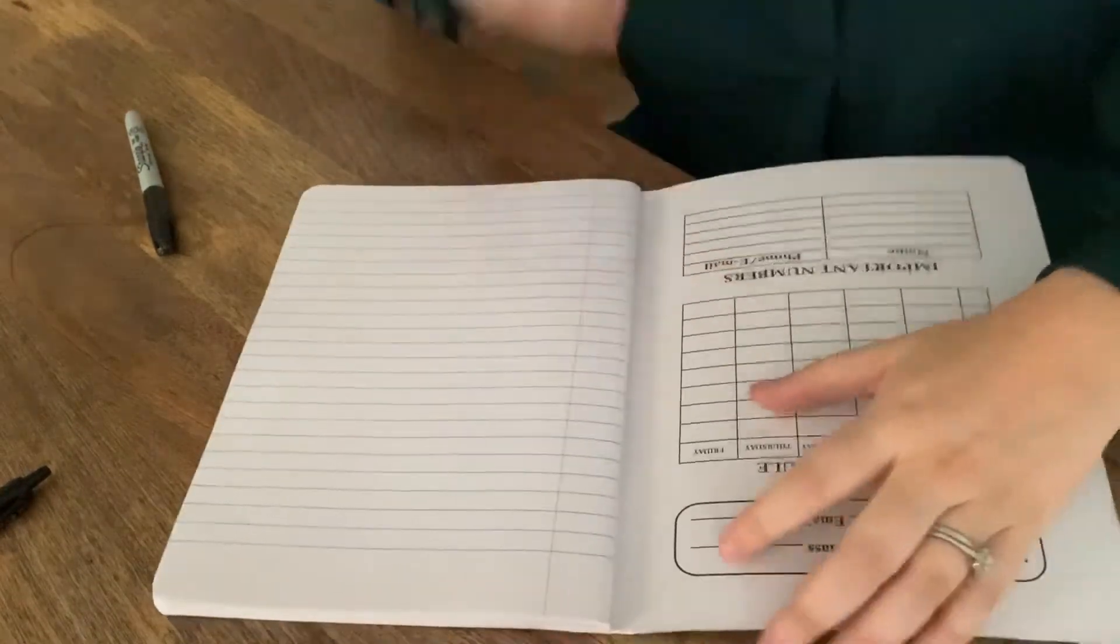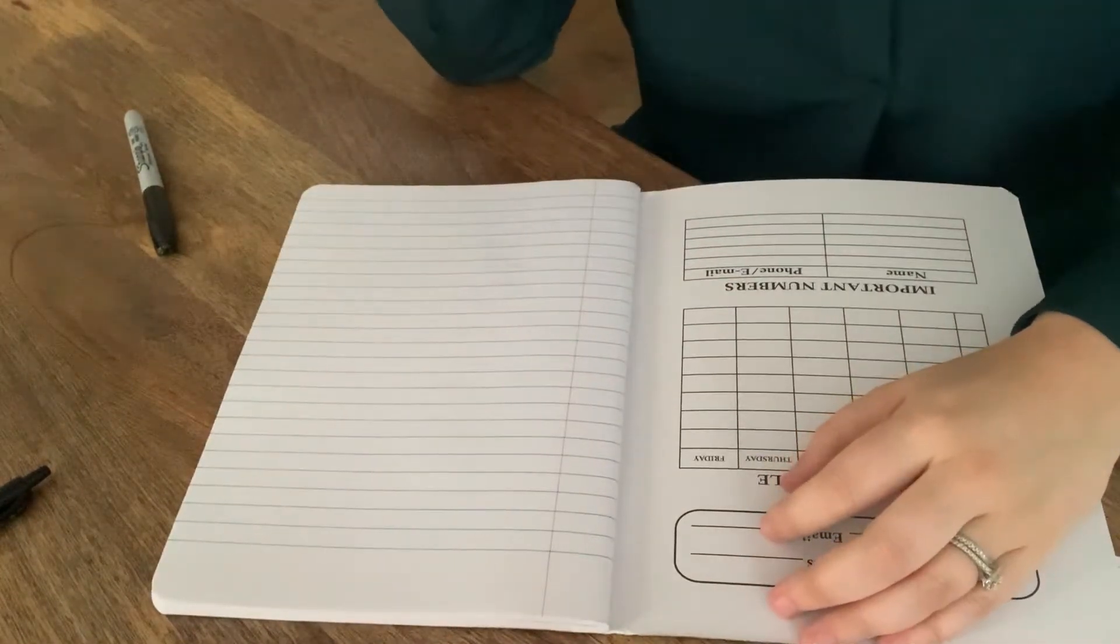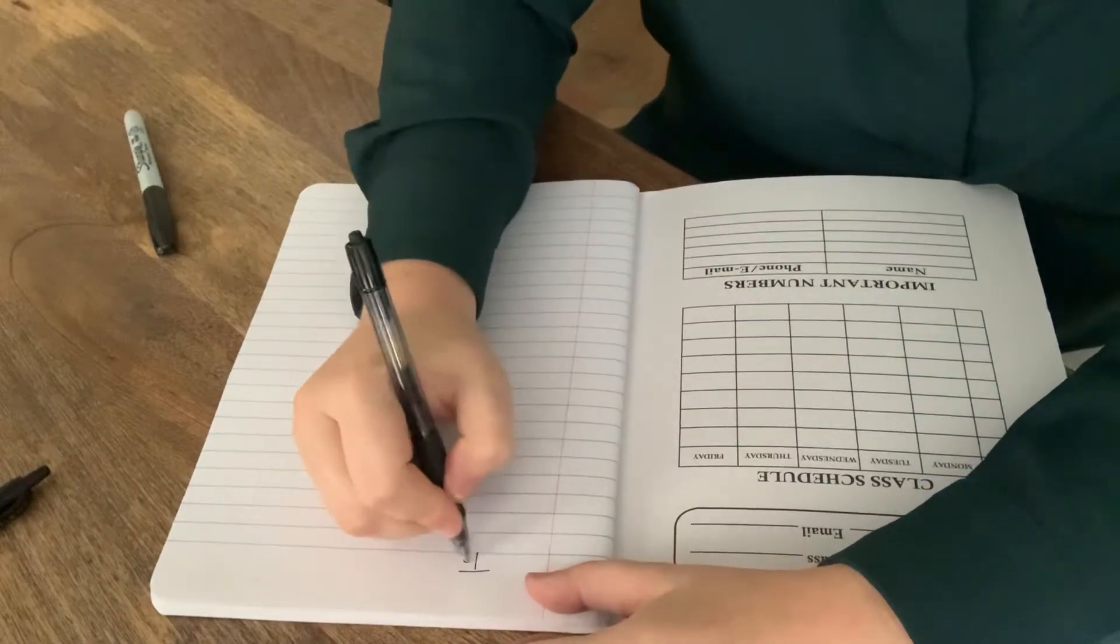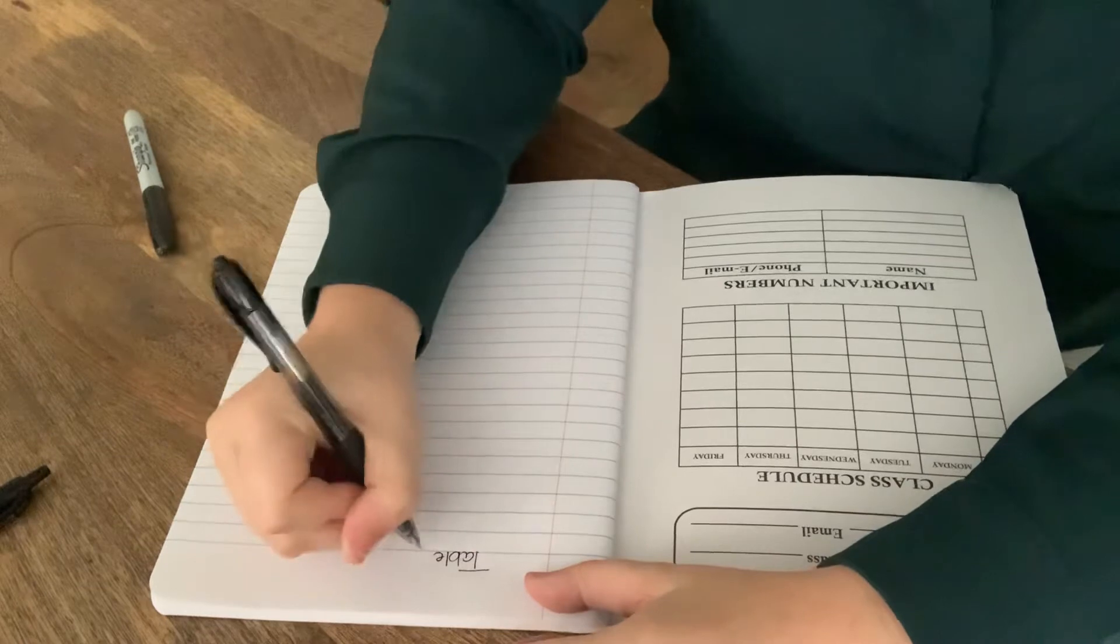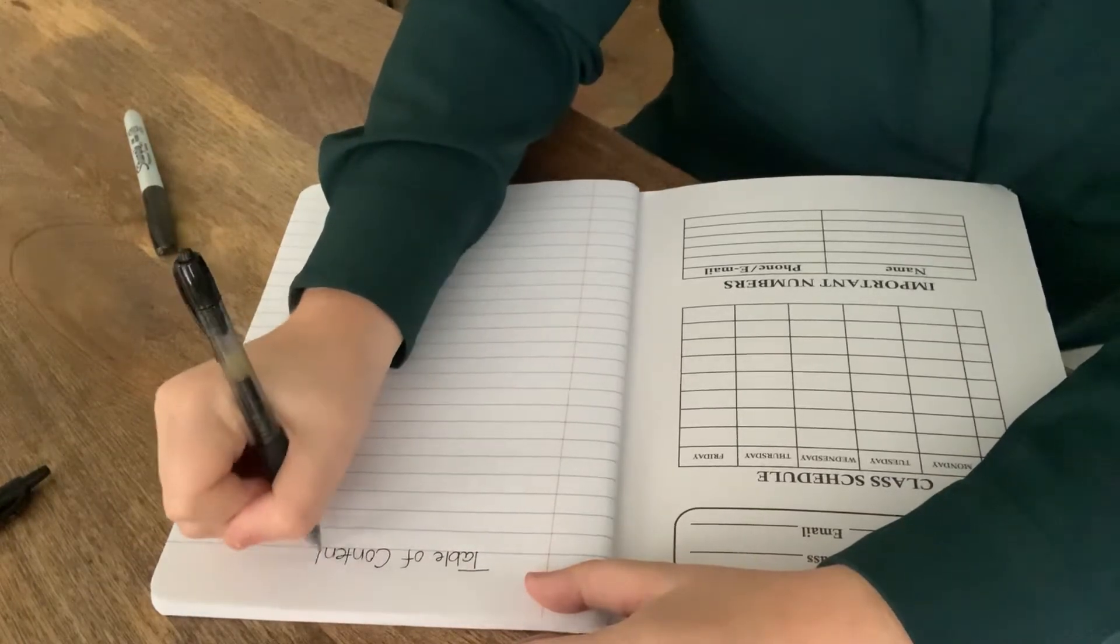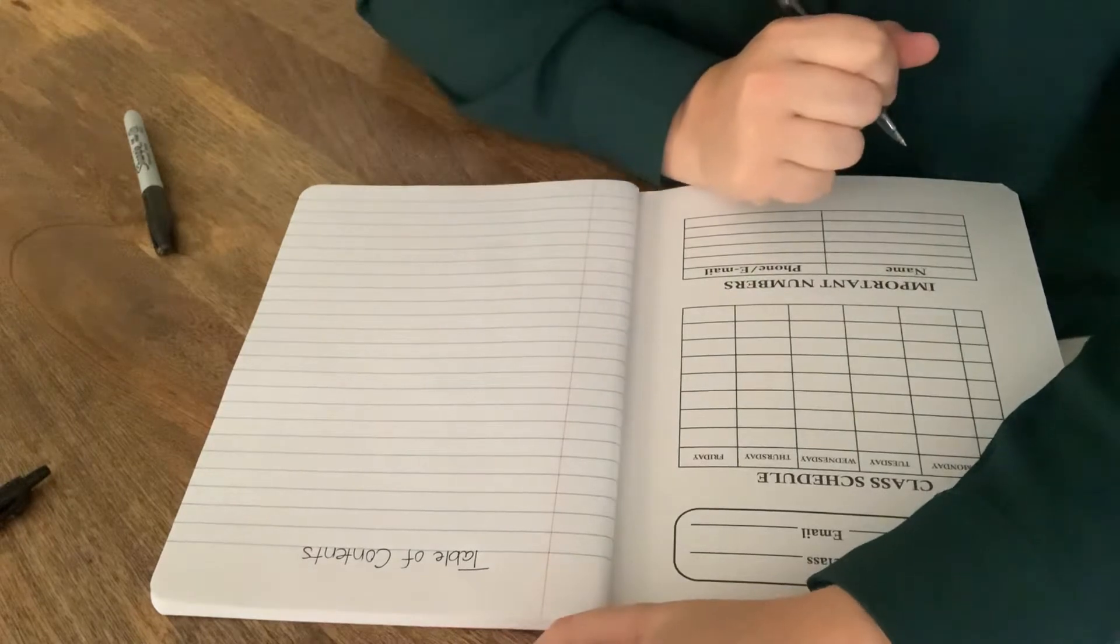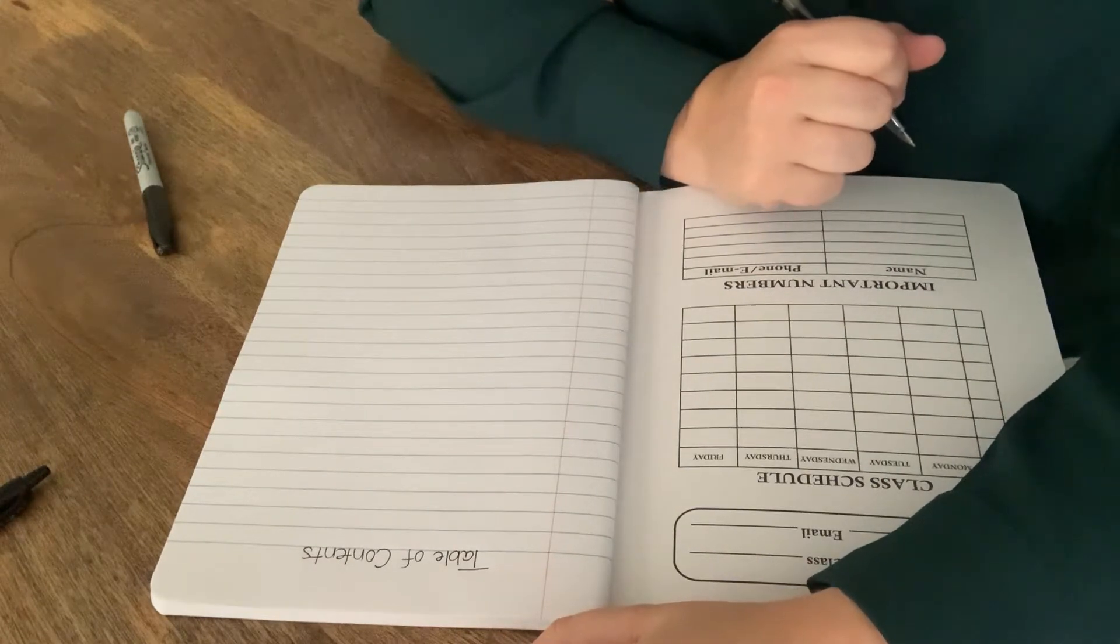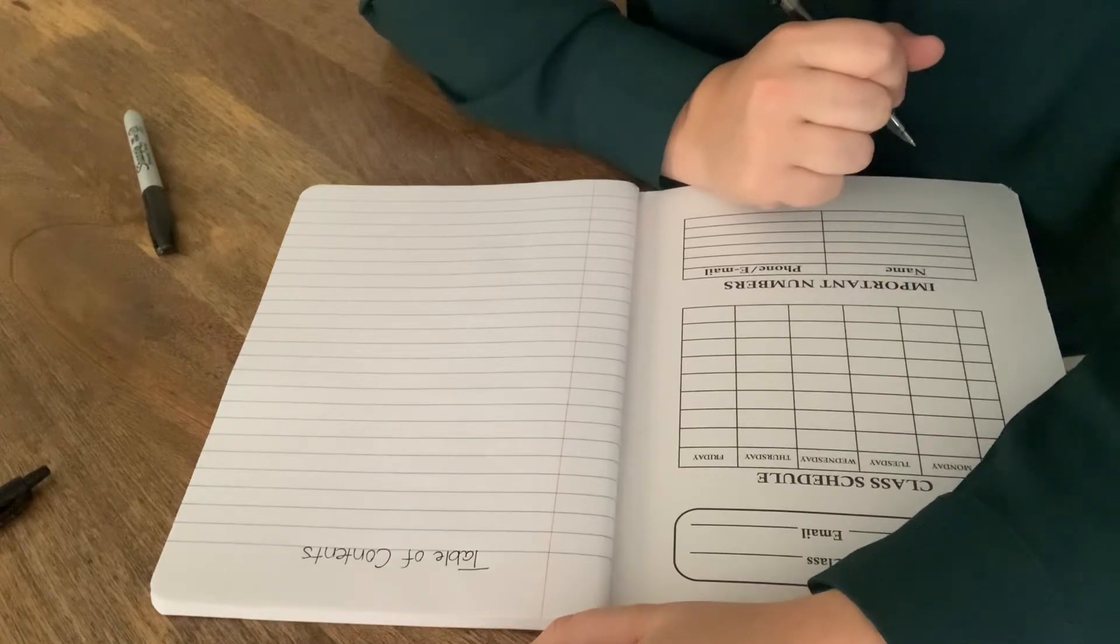On the very first page of your science journal, we need to create a table of contents. So if you will label the very first sheet, table of contents. It's just like a regular book.